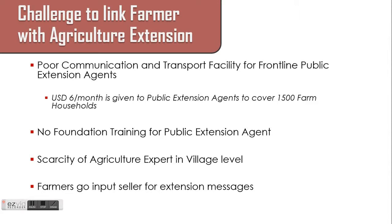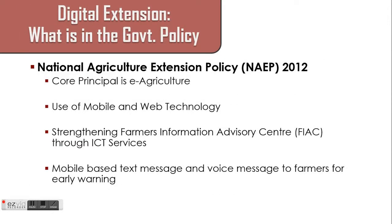That is why when farmers face any sort of problem, they go to input sellers for extension messages. Looking at the National Agriculture Extension Policy, one of the core principles is e-agriculture, which mentions using mobile and web technology to disseminate agriculture information to farmers. They also talked about farmer information advisory centers — agro-based telecentres from the government providing ICT services — and mobile-based text and voice messages to farmers for an early warning system.